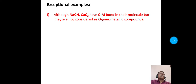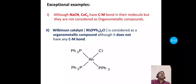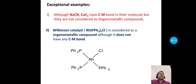Now consider the second exceptional example — the Wilkinson catalyst, which is chloridotris(triphenylphosphine)rhodium. In this molecule, there is no carbon-metal bond. If we see its structure, there are three bonds between rhodium and phosphorus, and one bond between rhodium and chlorine. So there is no carbon-metal bond in Wilkinson's catalyst. But this Wilkinson catalyst is considered an organometallic compound, although it does not contain a carbon-metal bond.